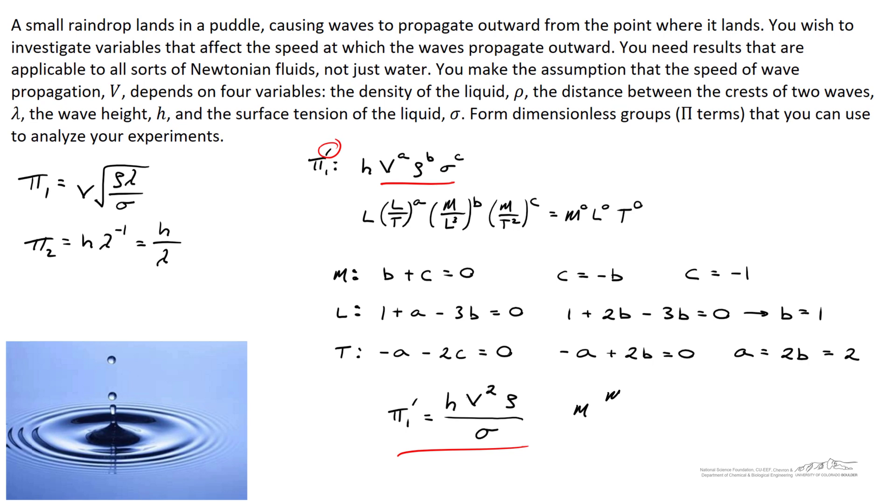And if we check units on this, the value of h has units of meters. We've got meters squared per second squared for the velocity squared. We've got kilograms per cubic meter for the density. And surface tension has dimensions of kilograms per second squared. When we invert this, we'll have seconds squared per kilogram. And hopefully all of these units cancel out, and we have a dimensionless quantity.